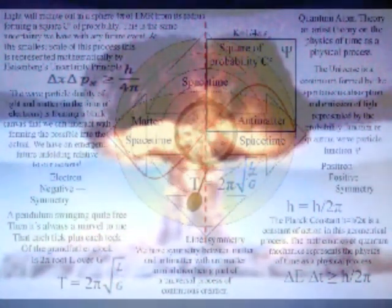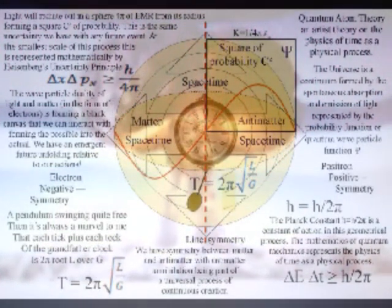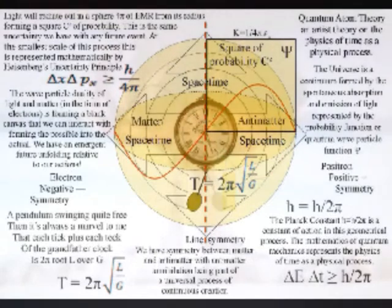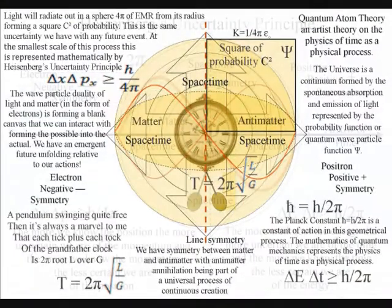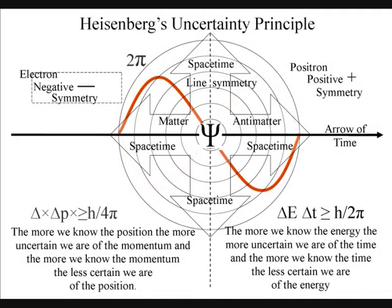This simple diagram highlights the continuous connection between energy and time and how Heisenberg's uncertainty principle works within an individual reference frame. The more we know the energy, the more uncertain we are of the time, and the more we know the time, the less certain we are of the energy.